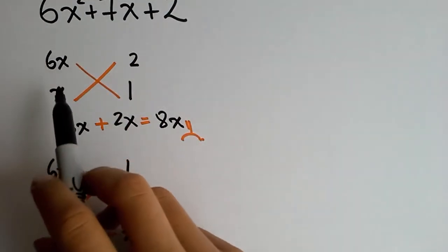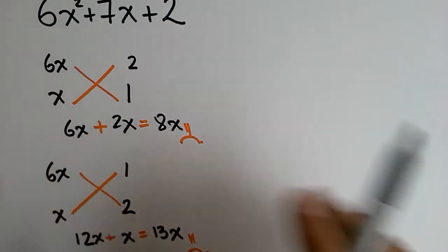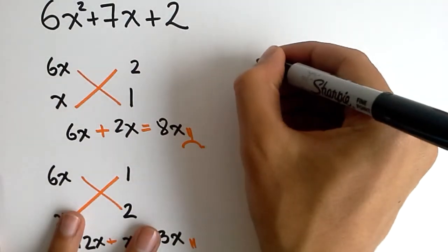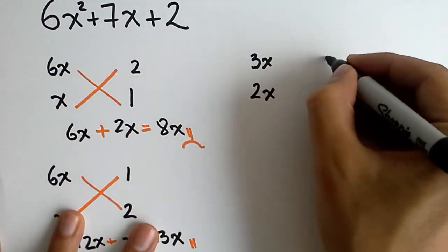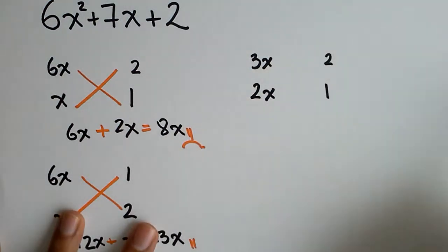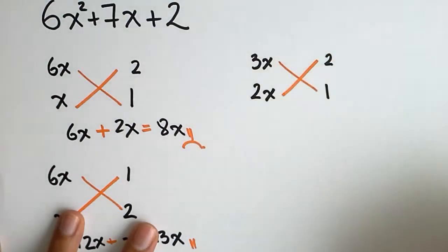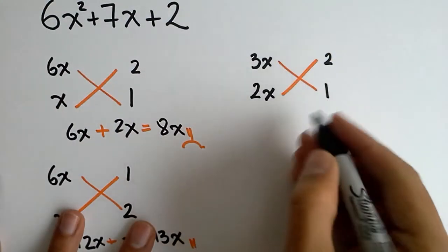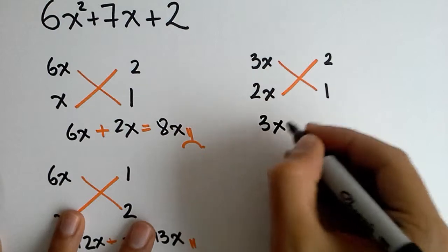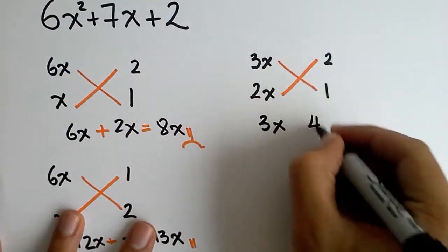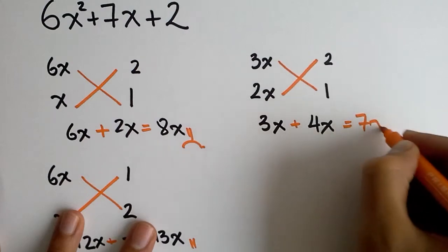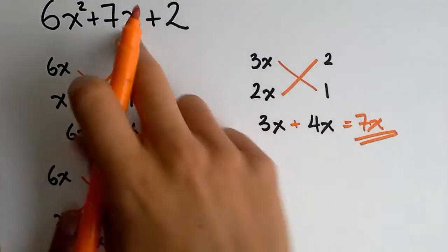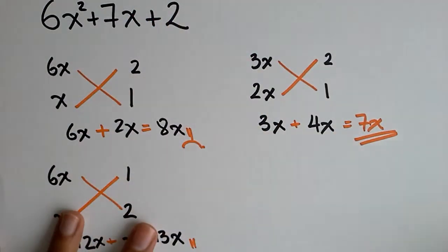So, 6x squared can be written as 6x and x but it can also be written as 3x and 2x. Once again, you need to write 2 and 1. And let's start multiplying. So, 3x times 1 is 3x. 2x times 2 is 4x. When you add them, you obtain 7x. Notice that this guy is the term that you're looking for. So, you just found your solution.